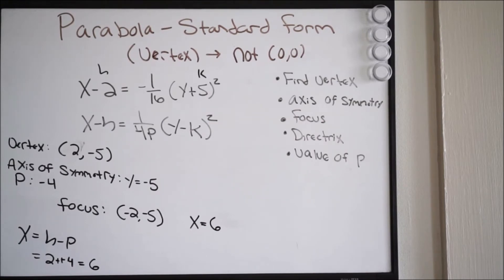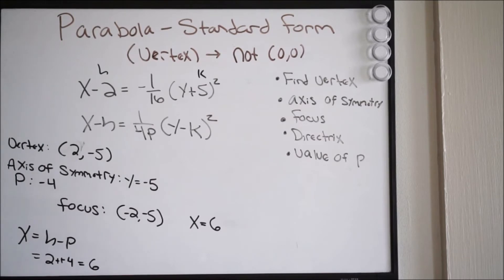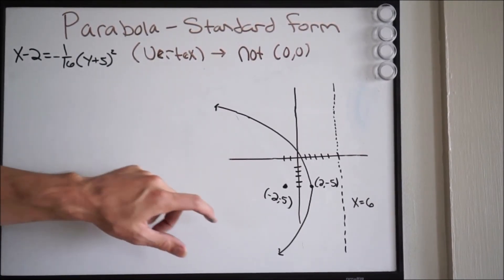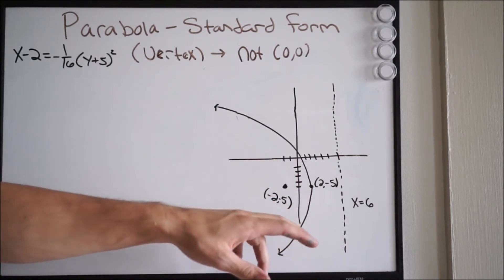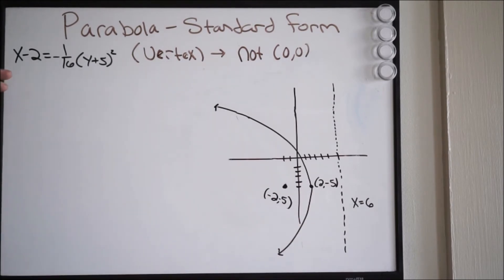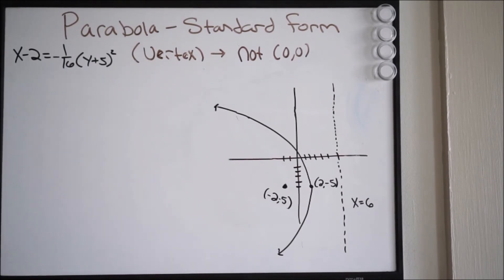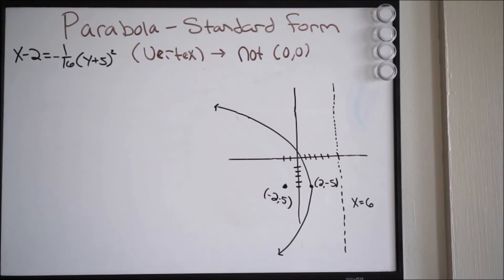We've now found all these values. Let's go a little further with this problem — let's work in reverse. Given these values, let's recreate the equation from them. I'll go ahead and graph this. Here is our parabola: the focus at (−2, −5), the vertex at (2, −5), and the directrix at x = 6. We can find the equation of any parabola if we're given the focus and directrix by using the distance formula.